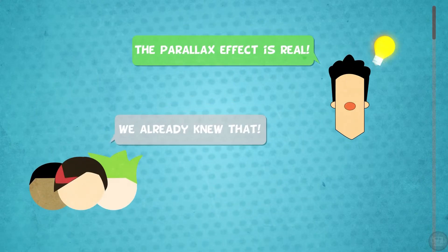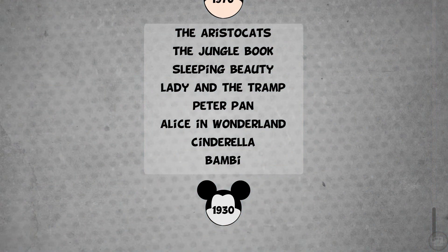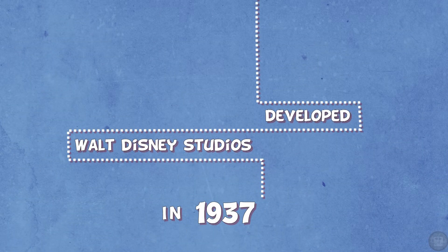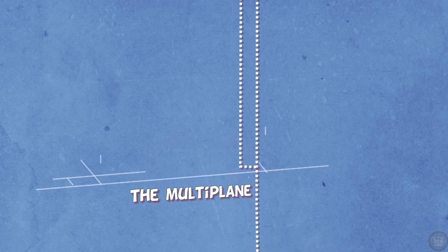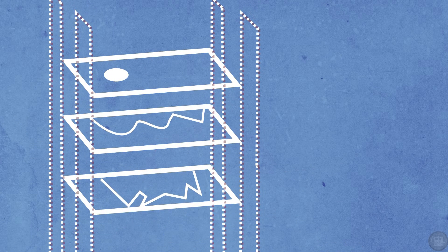Now I'd like to tell you I figured this all out by myself, but the truth is animators knew about the parallax effect way before I was even drawn, and they knew that simulating the parallax effect in their animations would give it more life — but they just didn't have the technology back then. The solution to this problem came in 1937.